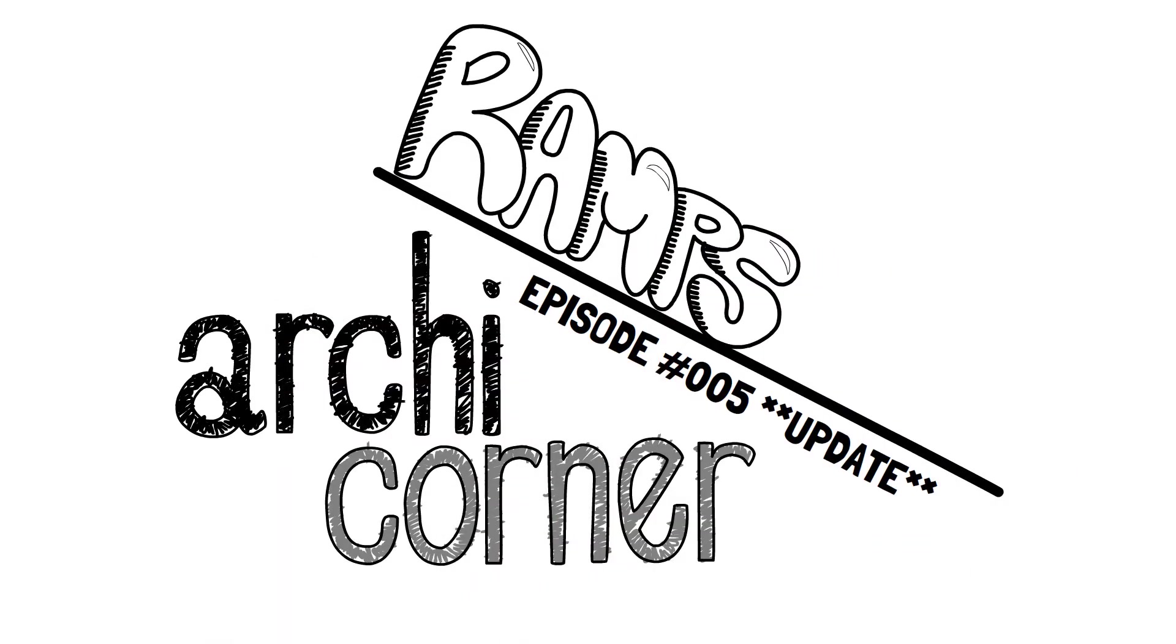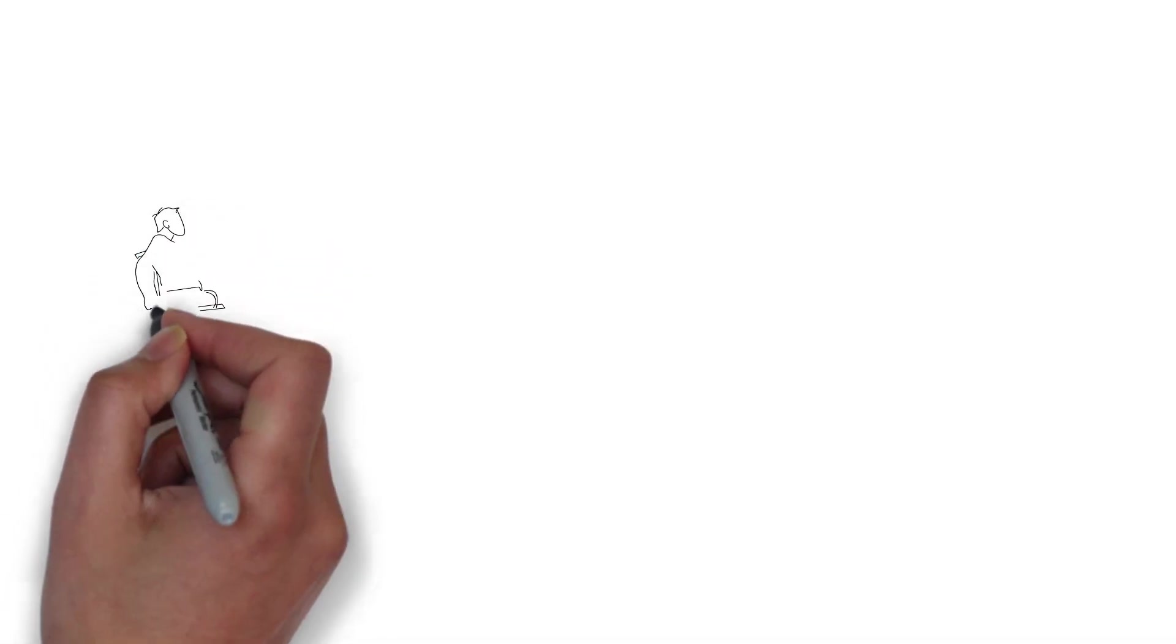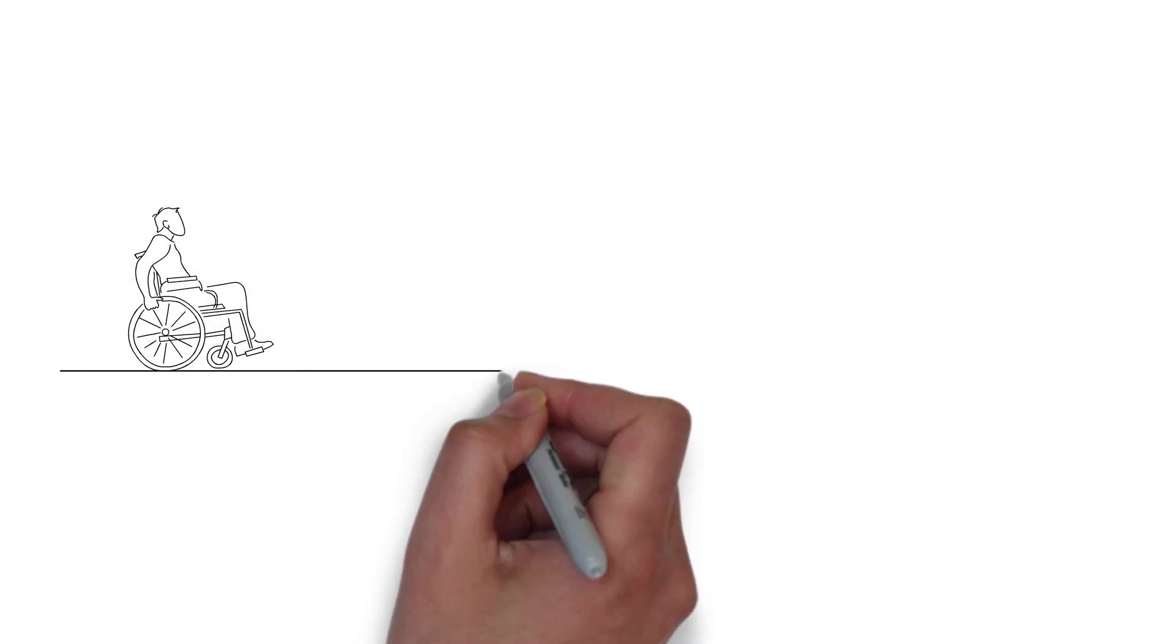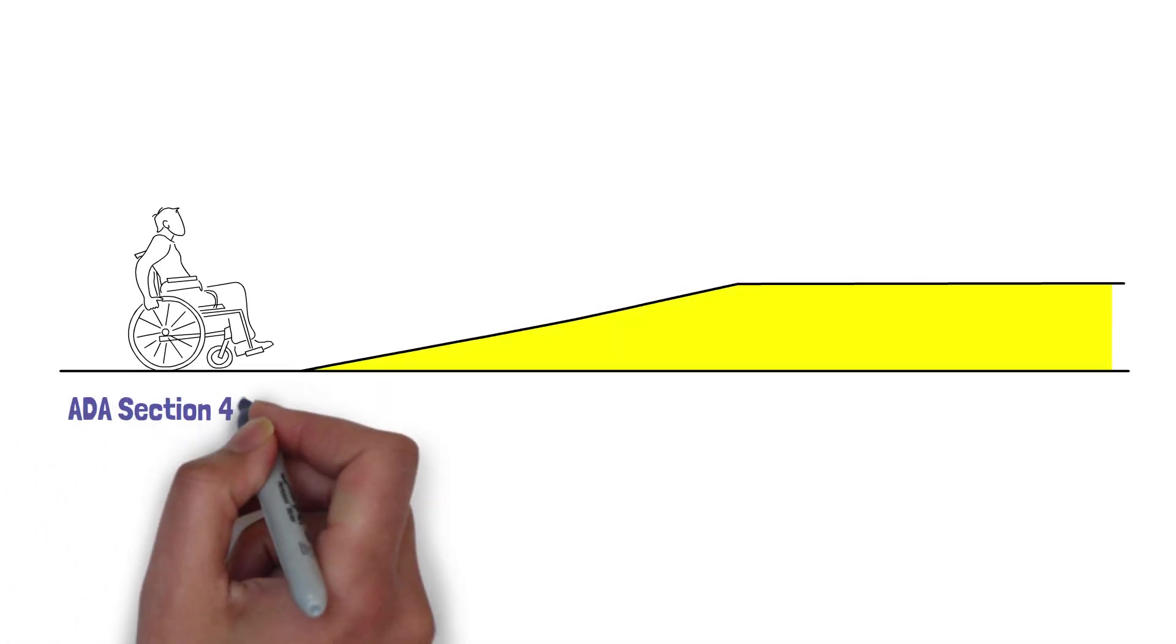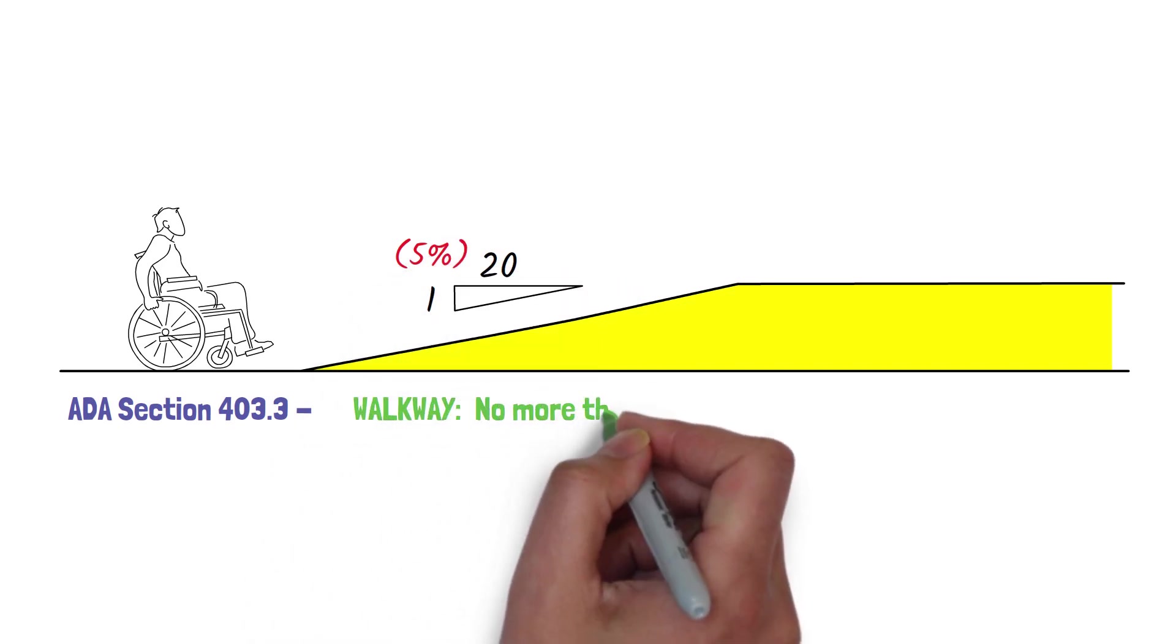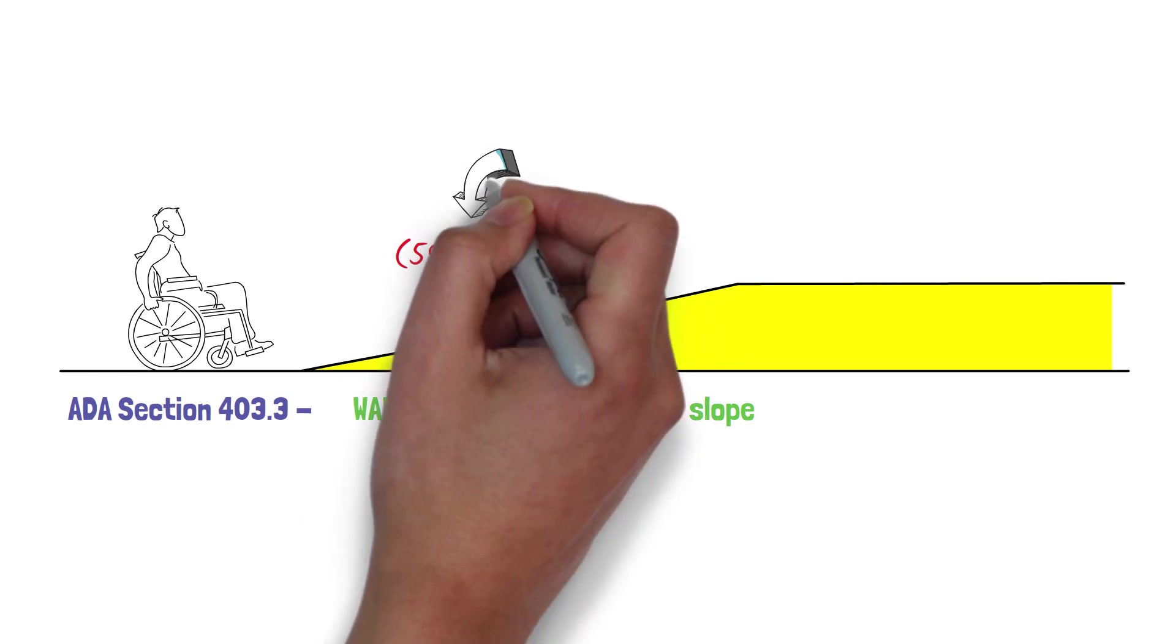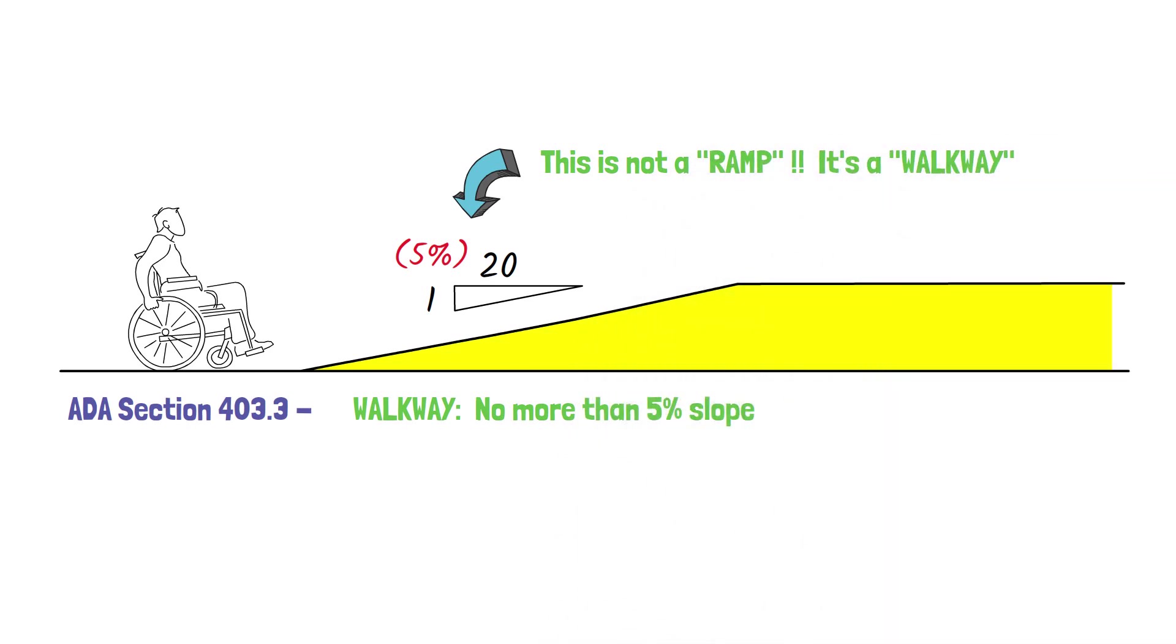Let's start with the basics. You may already know what a ramp is, but what are the technicalities that make a sloped floor a ramp per ADA? Well, it is all about the steepness of the slope. A walking surface is defined by ADA Section 403.3 as a walkway having a slope that is not steeper than 1 in 20 or 5% slope. So if your path of travel has a walkway that is within those parameters, guess what? You do not have a ramp. Technically, it's just a walkway.